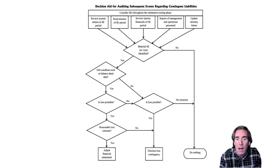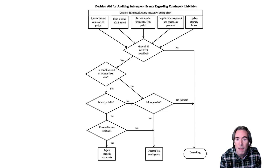If they can, they need to adjust the financial statements. So in order for an adjustment to be required, the condition had to exist at the balance sheet date, and the loss had to be probable and reasonably estimatable.